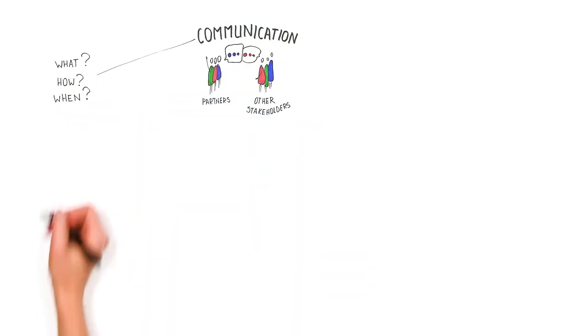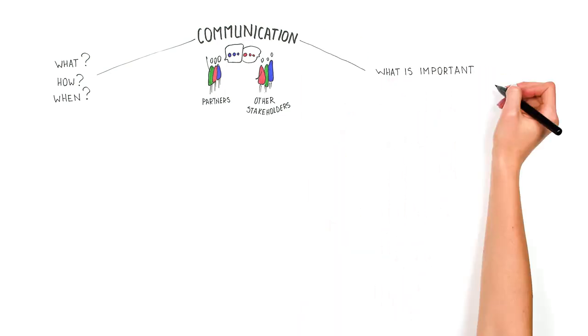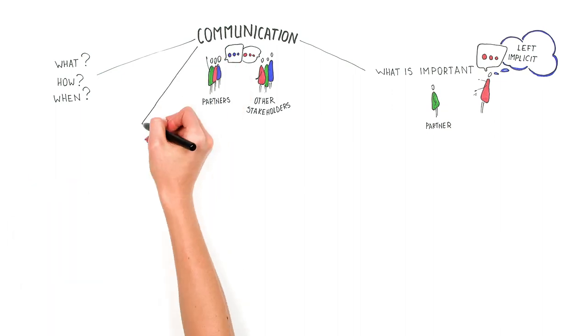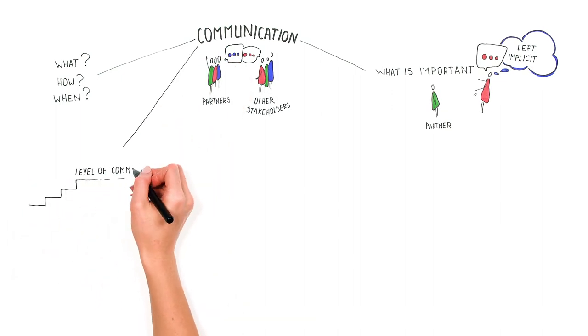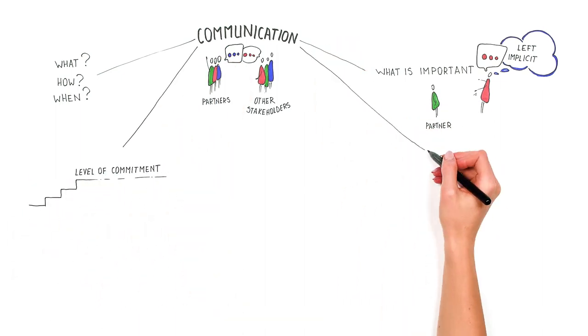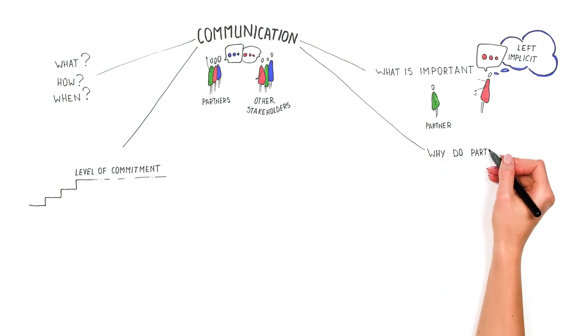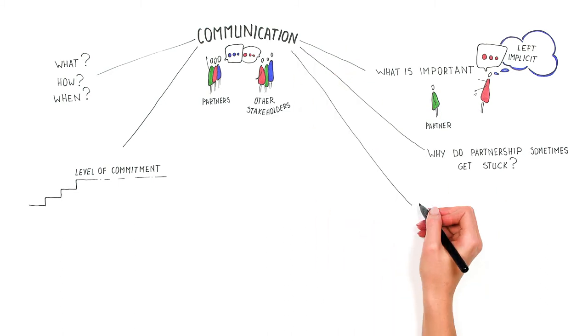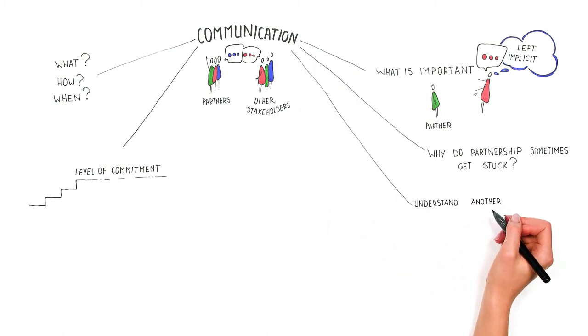What, how and when to communicate? What is important to tell a partner and what should be left implicit? What is the level of commitment to a communication process? Why do partnerships that seem to start so well, carried out by the best of friends, sometimes get stuck because of the lack of communication? To what extent is it possible to attempt to understand another culture?